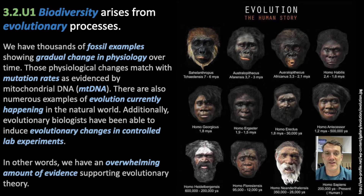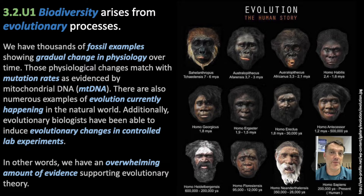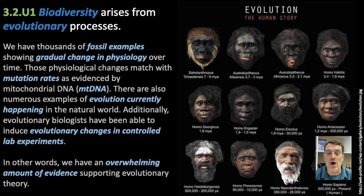Evolution is probably the most heavily evidenced scientific theory in history. We have thousands of fossil examples from a wide range of species spanning several billion years. We have genetic evidence in mitochondrial DNA, and we can track mutation rates across generations. We can watch evolution happening in real time, both in laboratory experiments and with things like bacterial resistance to antibiotics happening in the world's hospitals. There is an overwhelming amount of evidence in support of evolution by natural selection.